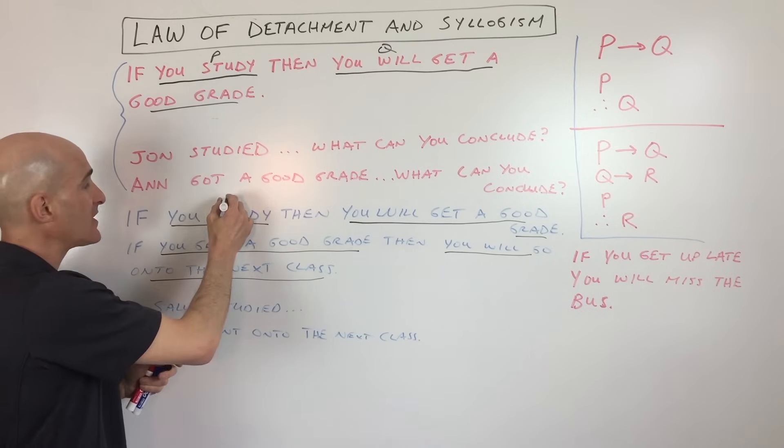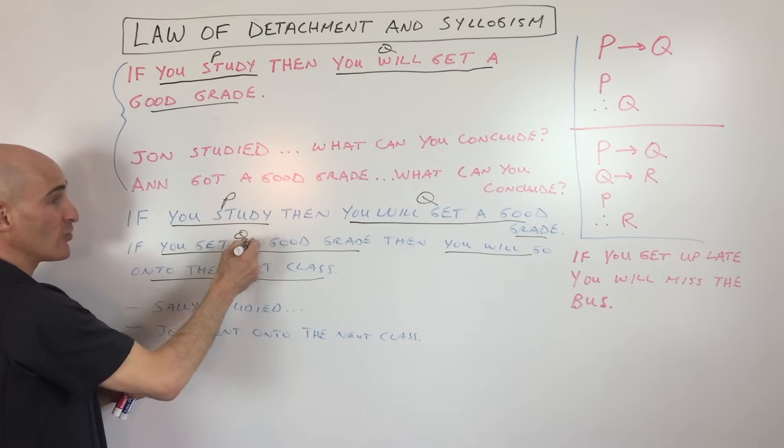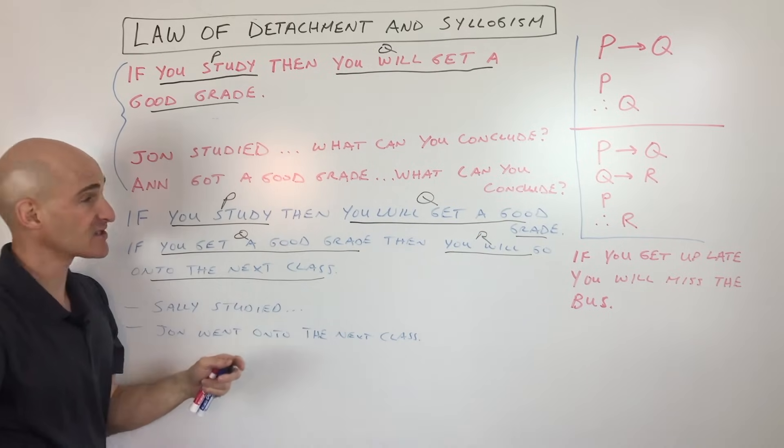So again, if you want to diagram this out, I would call this P, this Q, this is Q, because you can see we're repeating that statement, and then it causes R, which is going on to the next class.